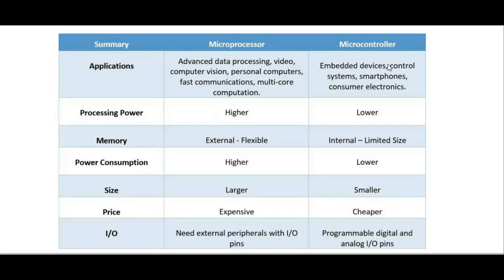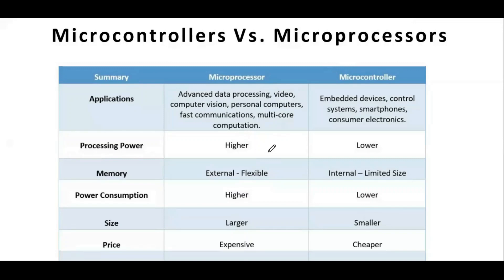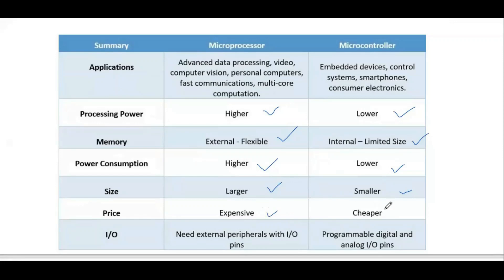Microcontrollers are used in control systems, smartphones, and consumer electronics. Regarding memory, microprocessors use external memory while microcontrollers have internal memory of limited size. For I/O, microprocessors require external peripherals, while microcontrollers have built-in I/O pins for interfacing with peripheral devices.